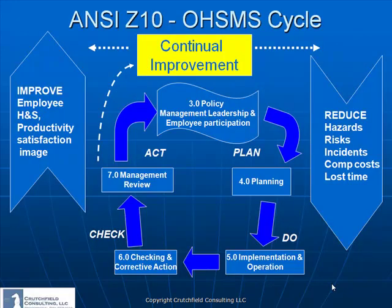In 2005, ANSI published Z10, the Occupational Health and Safety Management Systems. This approach follows the Shewhart diagram of plan, do, check, and act. It brings together a number of the essential parts of a program with the goal of improving employee health and safety, with the byproduct of productivity, satisfaction, and image improvements. In correlation with this, there would be a reduction in hazards, risk, incidents, compensation costs, and overall lost time from workers' compensation claims or various injuries.